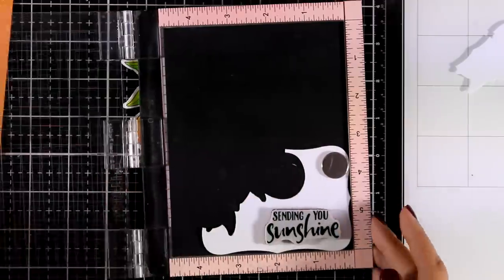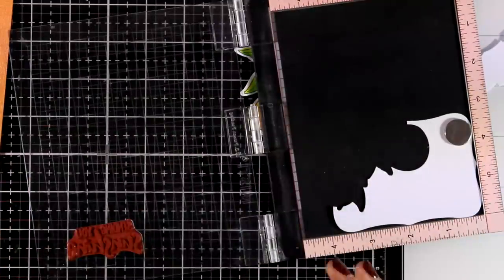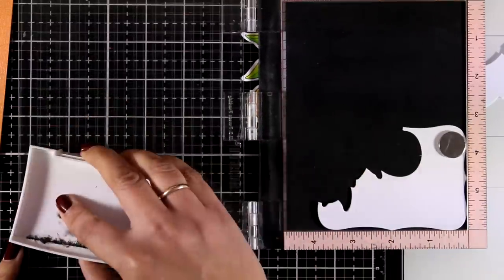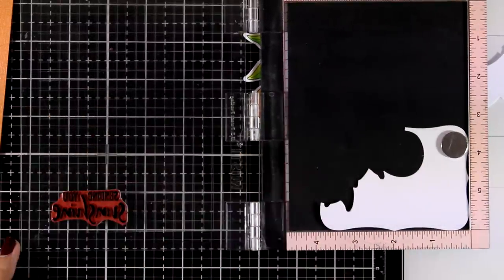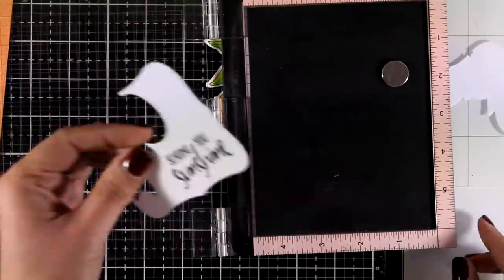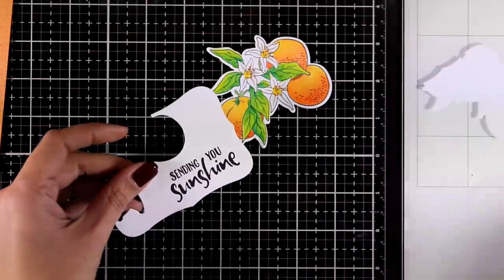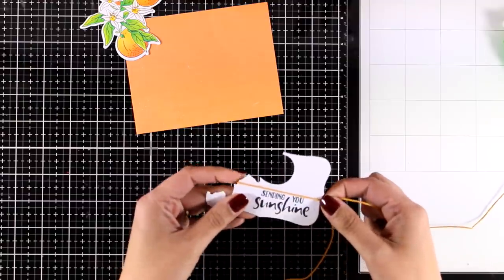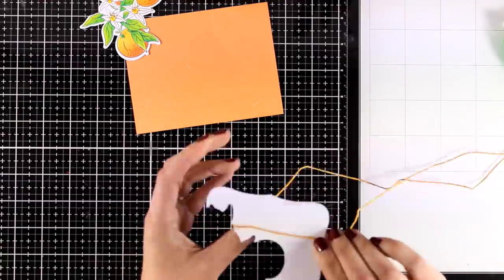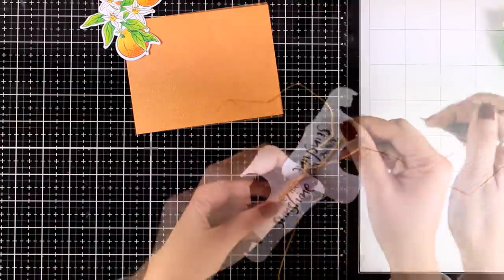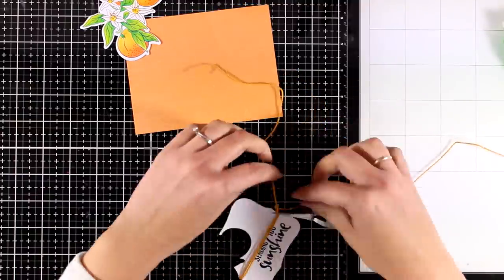I'm going to stamp the sentiment first. I went with one sentiment from the stamp set that says sending you sunshine, which I'm stamping with onyx black Versafine ink. It's a great ink for stamping sentiments because they end up really bold and black. I'll wrap a little bit of orange thread that matches the cardstock of my card base, and I'm just going to tie a bow on the label.